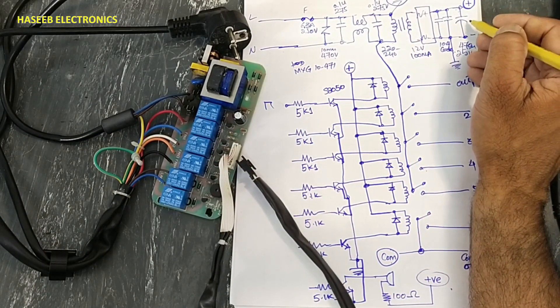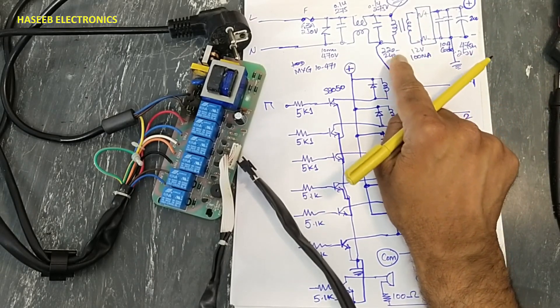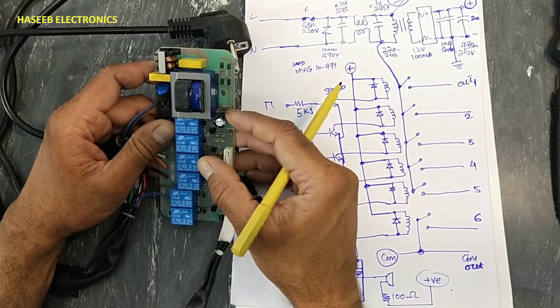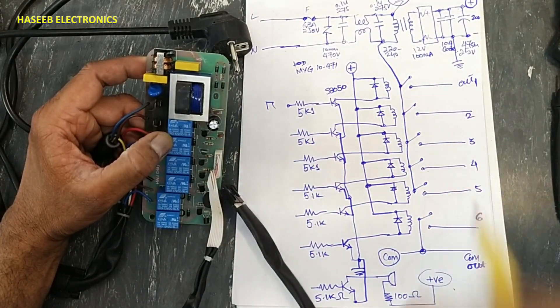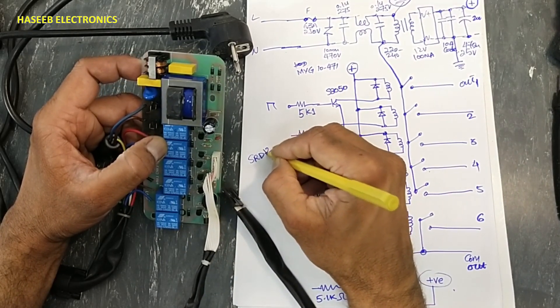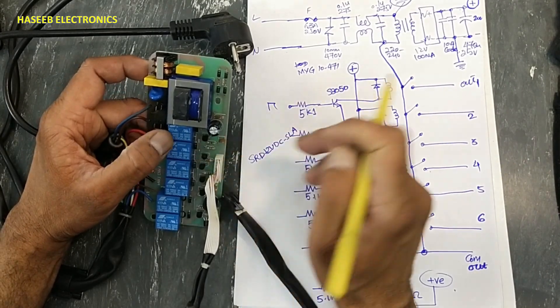When the circuit is powered on, it will provide around 20 volts here because it is a 12 volt transformer. 20 volts, and all the relays part number is SRD. Relay part number SRD dash 12 volt DC, SLA. It is a 10 ampere relay.